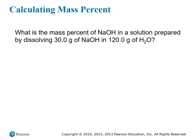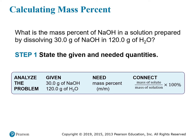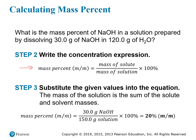Here's another example: what is the mass percent of sodium hydroxide in a solution prepared by dissolving 30 grams of sodium hydroxide in 120 grams of water (H₂O)? The 30 grams of NaOH is the solute, and 120 grams of water is the solvent. Adding them gives a total solution mass of 150 grams. The mass percent is 30 divided by 150, times 100, giving a 20% solution of sodium hydroxide by mass.